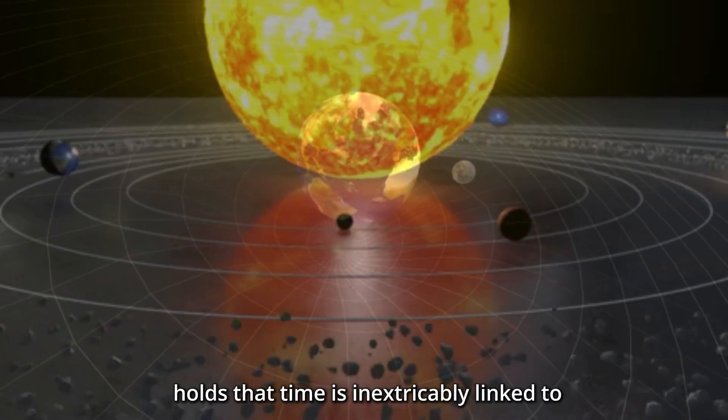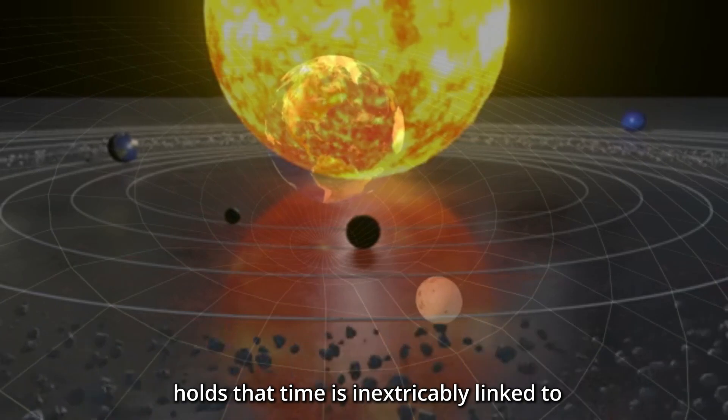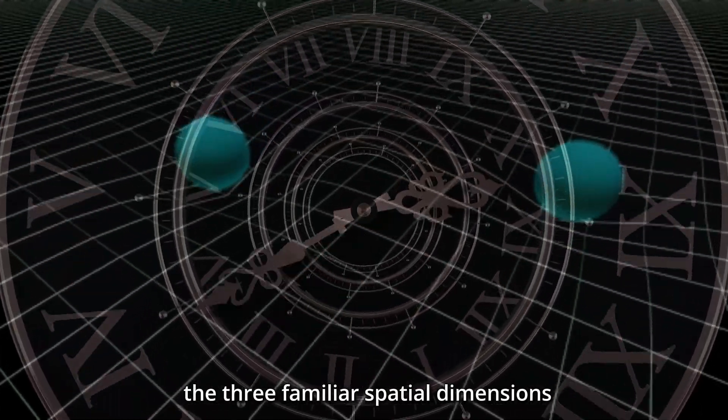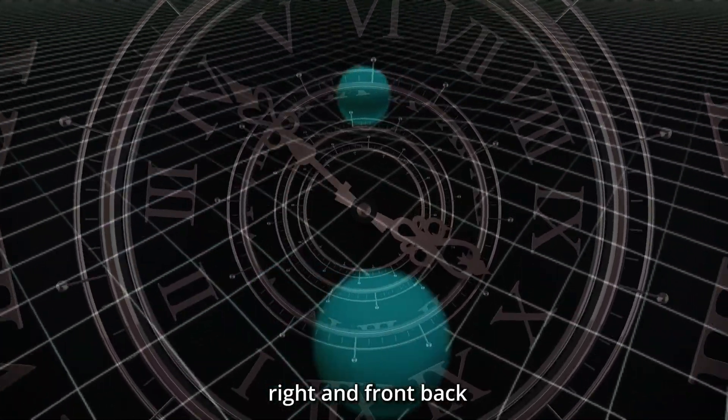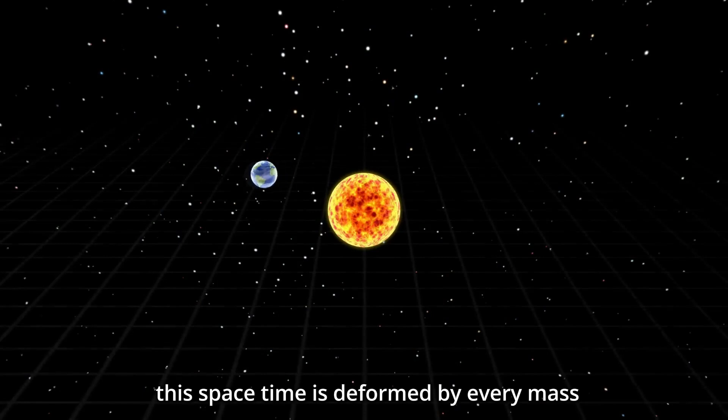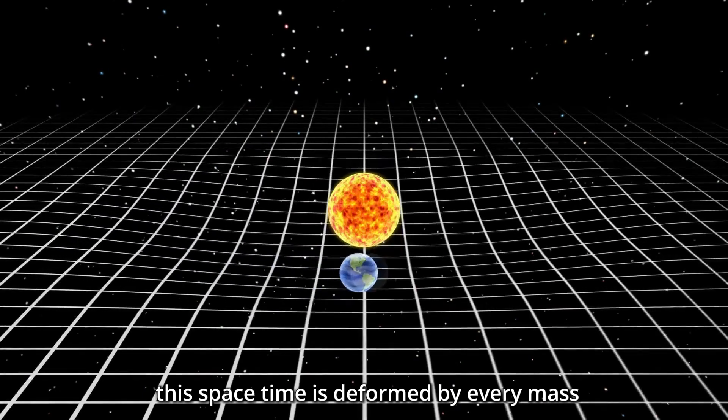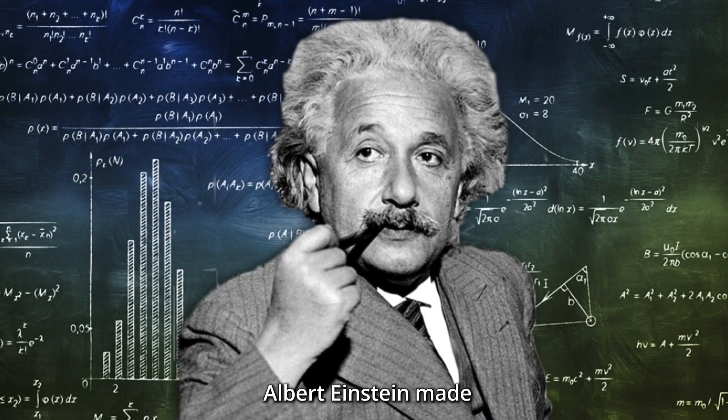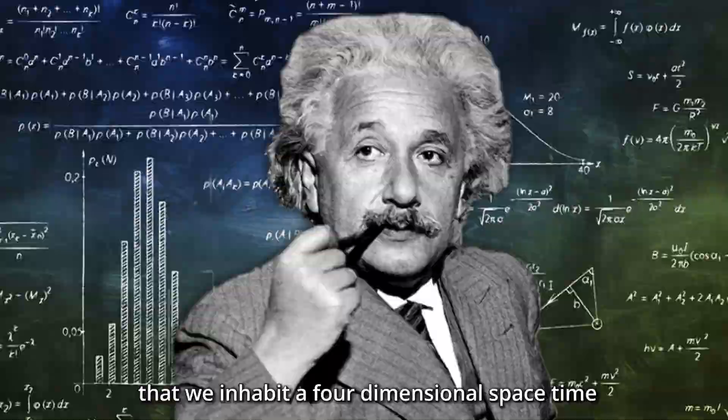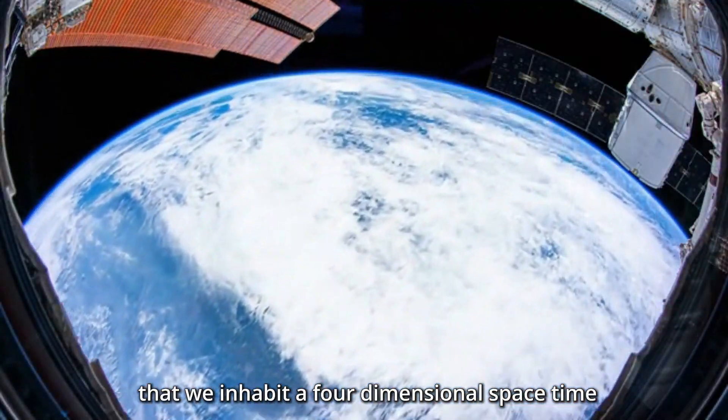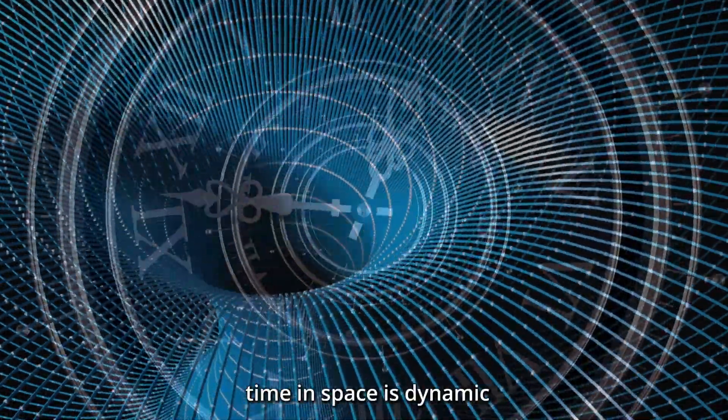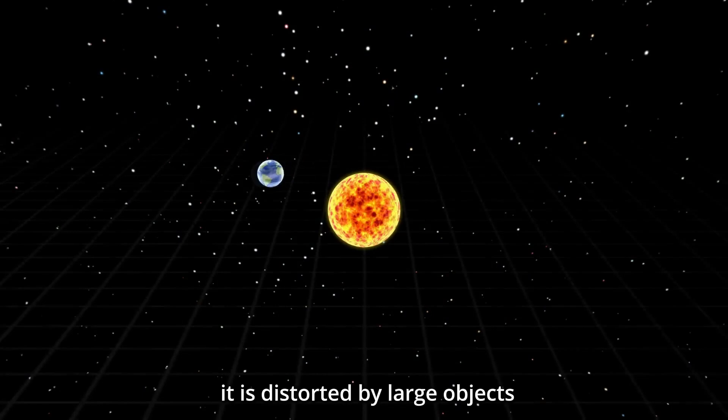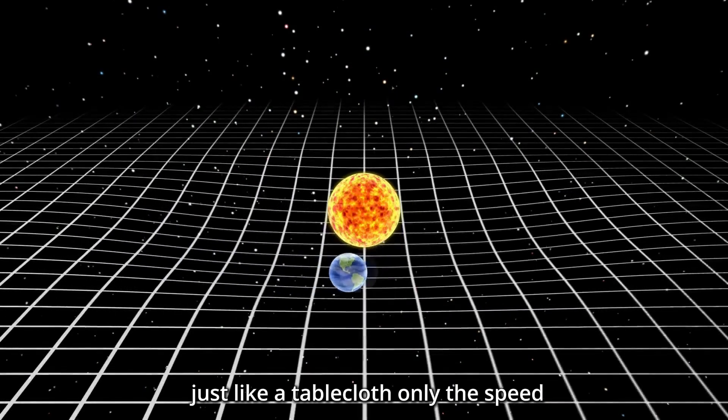General relativity holds that time is inextricably linked to the three familiar spatial dimensions of up-down, left-right and front-back. This space-time is deformed by every mass. Albert Einstein made the incredible discovery that we inhabit a four-dimensional space-time. Time in space is dynamic. It is distorted by large objects, just like a tablecloth.